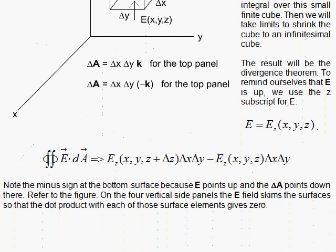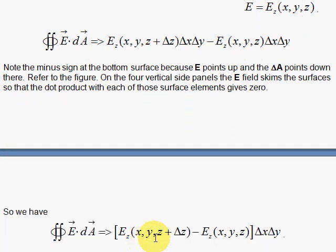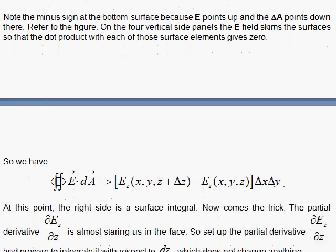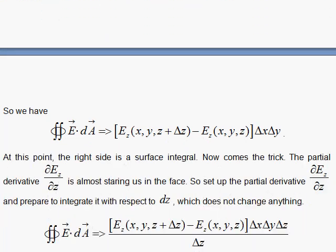Now, we notice that the derivative, the partial derivative of E sub z with respect to z is almost staring us in the face. So, we multiply by delta z over delta z, so we can have the partial derivative. We don't change anything when we do that. And, when we do our integral, we set up the integral, the integral of the derivative of the E sub z with respect to z integrated with respect to dz doesn't change anything.